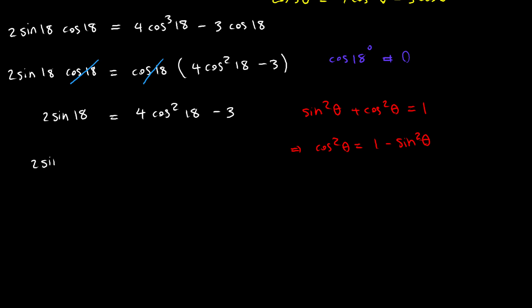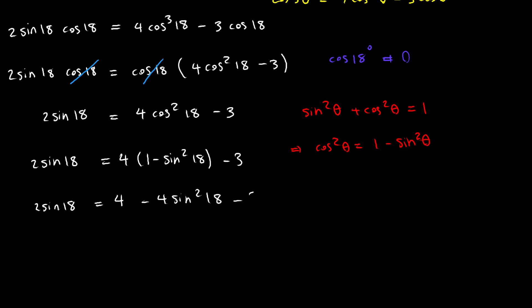Applying the substitution, I have 2 times sine of 18 equals 4 times the quantity 1 minus sine squared of 18, minus 3. Simplifying: 2 times sine of 18 equals 4 minus 4 times sine squared of 18 minus 3. Putting everything on the same side gives 4 times sine squared of 18 plus 2 times sine of 18 minus 1 equals 0.